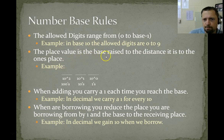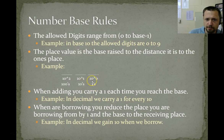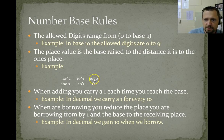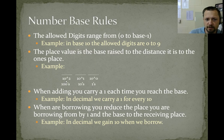The place value is the base raised to the distance it is from the ones place. Remember, the first number is always the ones place first, so here is our base raised to 0. This is 0 away from the ones place — it is the ones place. 10 to the 0 is 1, that's why this is the ones position. This is the tens position because it is 10 raised to the 1. This is the 100s place because it is 10 raised to the 2; 10 times 10 is 100.